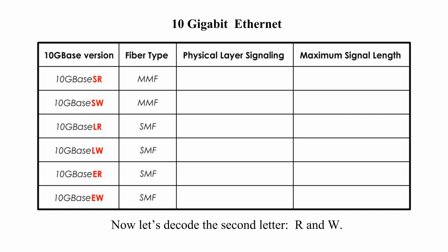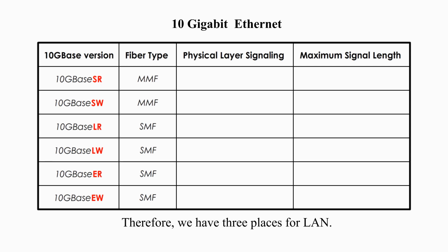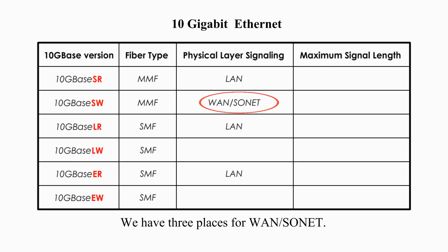Now let's decode the second letter, R and W. R stands for range, which means local area network or LAN — therefore we have three versions for LAN. W stands for wide area network or WAN, and specifically SONET or WAN technology — we have three versions for WAN or SONET.